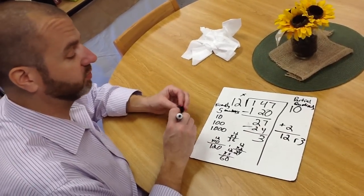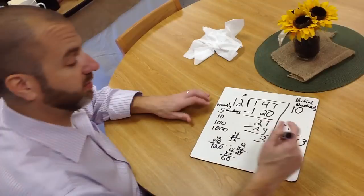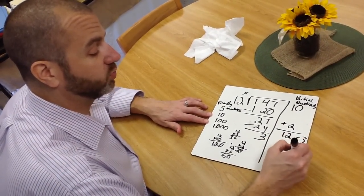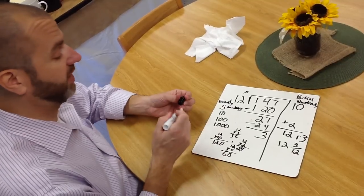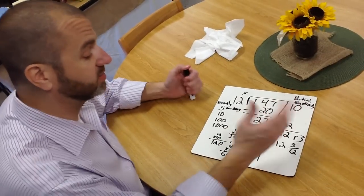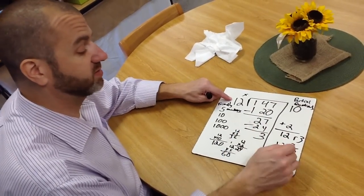So we write it as 12 remaining 3. And actually, the better way that we would want kids in 4th and 5th grade to write it would be 12 and 3 twelfths. And the reason we want them writing it as a fraction is because if you think about what a remainder is, a remainder is a fraction of the whole or a piece of the whole.